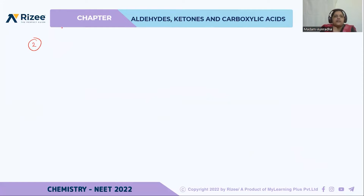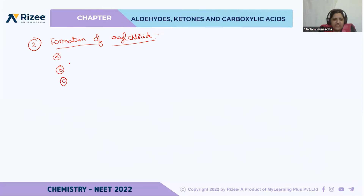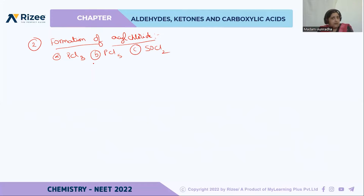The second reaction exhibited by carboxylic acid is formation of acyl chloride. This can be done by using three methods: PCl3 (phosphorus trichloride), PCl5 (phosphorus pentachloride), and SOCl2 (thionyl chloride).